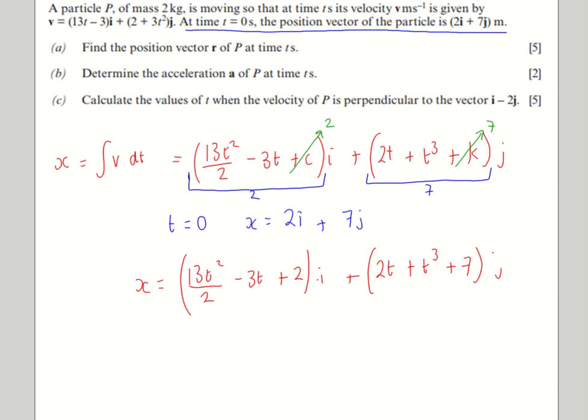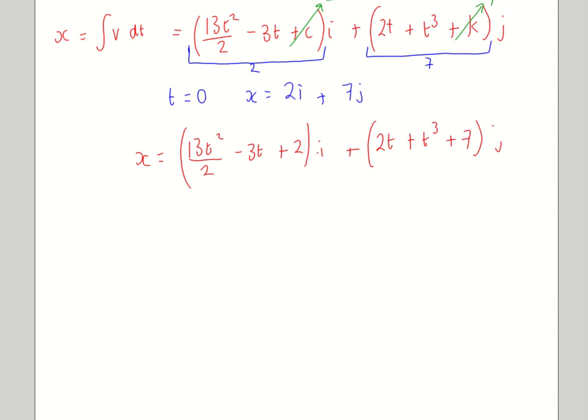Part B, we've got to find the acceleration. So go back to your velocity vector. And this time we need to differentiate. So part B, a is dv by dt. And that just very simply comes out as 13 in the i direction and plus 6t in the j direction.